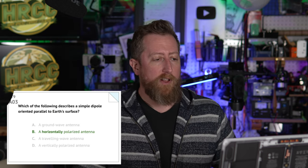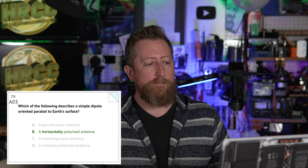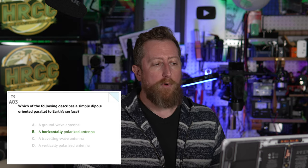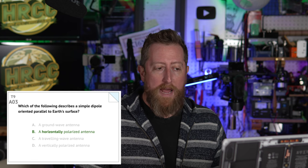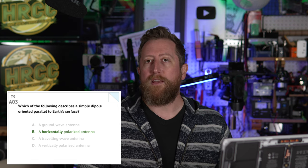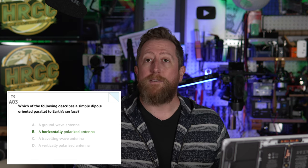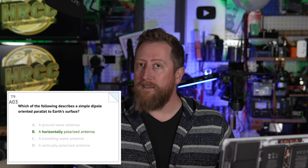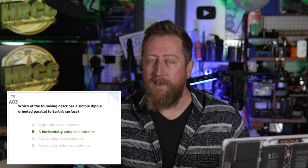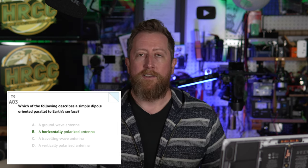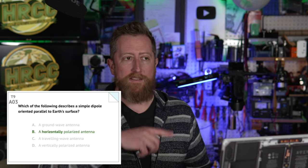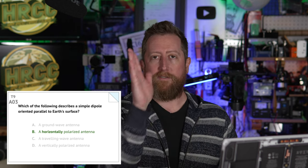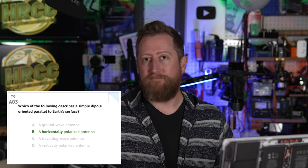Alpha 03: Which of the following describes a simple dipole oriented parallel to the earth's surface? That is B — a horizontally polarized antenna. And if you turn it vertically, it becomes a vertically polarized antenna.